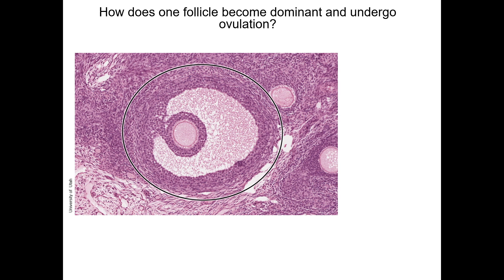How exactly does one follicle become dominant? The mechanisms are not completely understood but are hormonally controlled. The dominant follicle produces more estrogen from thecal cells and has more follicle stimulating hormone receptors on the granulosa cells, which may be why it is able to survive a severe drop in follicle stimulating hormone while other follicles die.